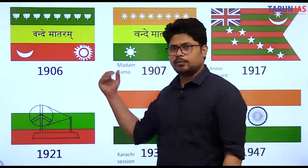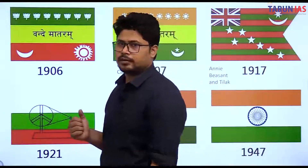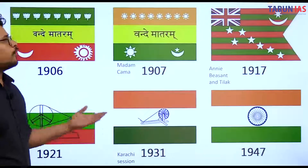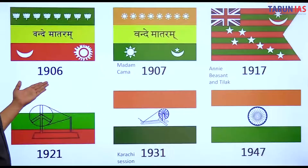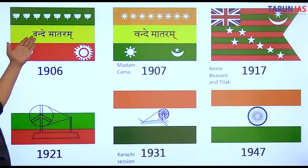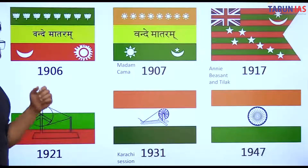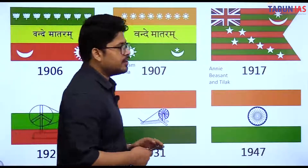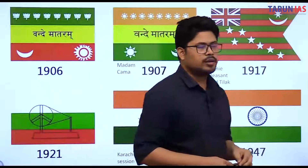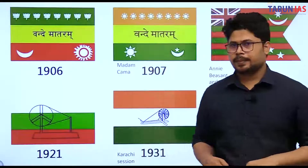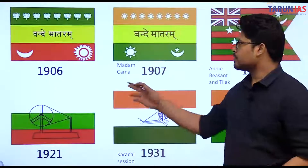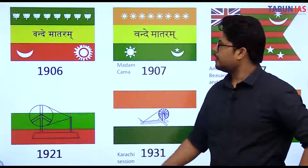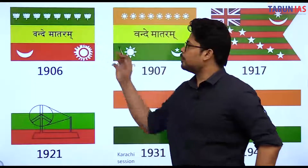The flag was designed by Pingali Venkaiya. Looking at the evolution of the Indian national flag, the first Indian flag was hoisted in Calcutta in 1906 or 1908. It had a lotus on top, a moon and sun at the bottom, and 'Vande Mataram' written in the middle.